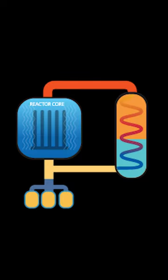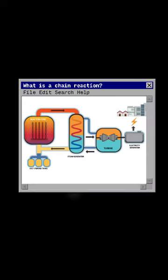The fuel rods containing the uranium pellets get hot as the reaction progresses. The faster the chain reaction — that is, the larger the number of uranium-235 atoms that disintegrate each second — the faster energy is released and the hotter the fuel rods become.